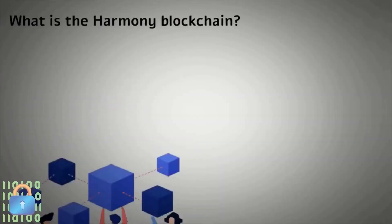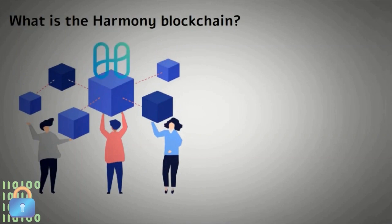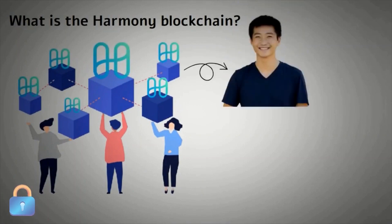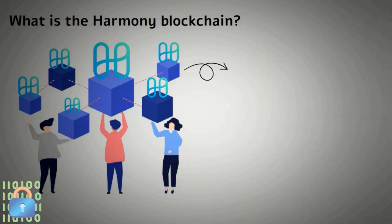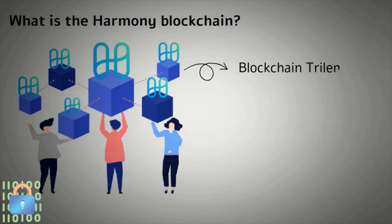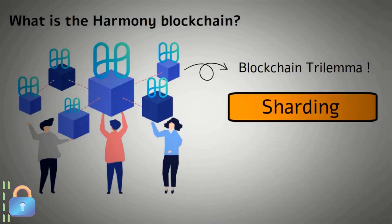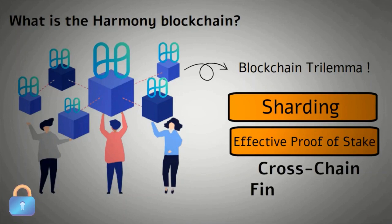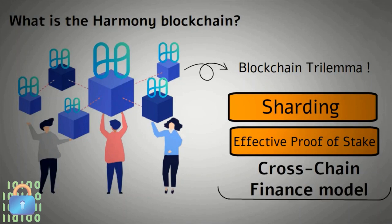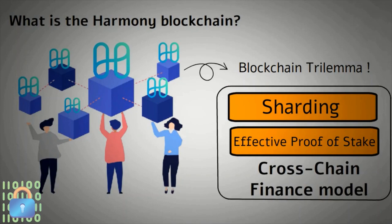Harmony is an effective proof-of-stake blockchain founded in 2018 by Steven Tsai with a mainnet launch in 2019. Like most post-Ethereum networks, it claims to solve the blockchain trilemma of decentralization, scalability, and security. Harmony's answer to the problem is sharding and its effective proof-of-stake consensus mechanism. Another key Harmony platform feature is its cross-chain finance model, and the popularity of cross-chain and multi-chain capabilities has increased dramatically today, with Harmony catering to this as well.